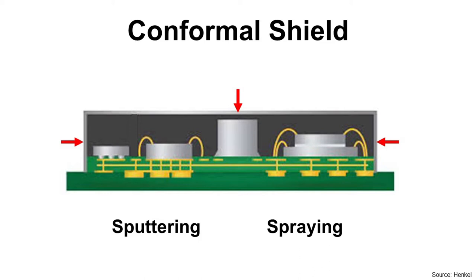There are two methods for conformal shield coating. One is sputtering. The other one is spraying. And for most cases, sputtering is used.